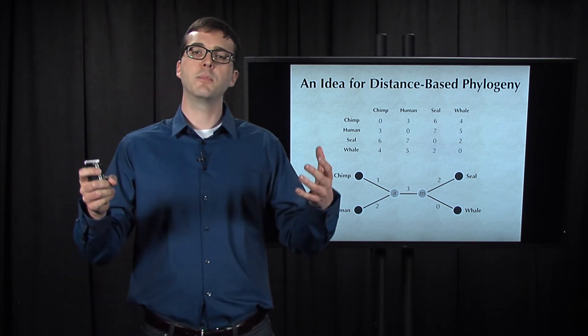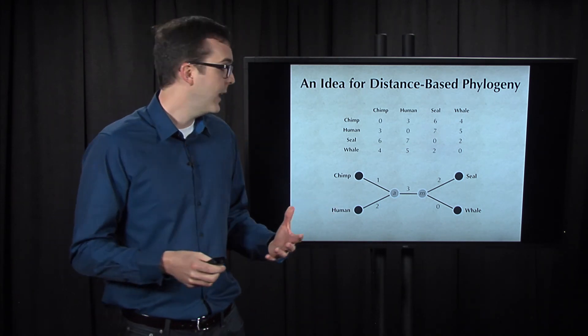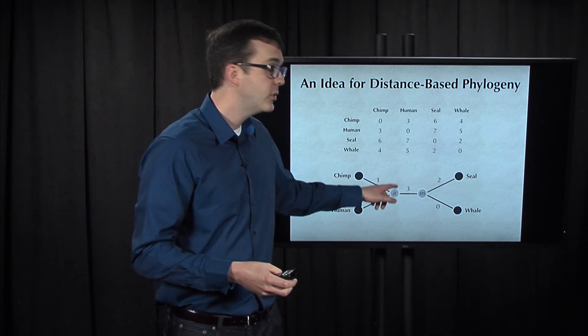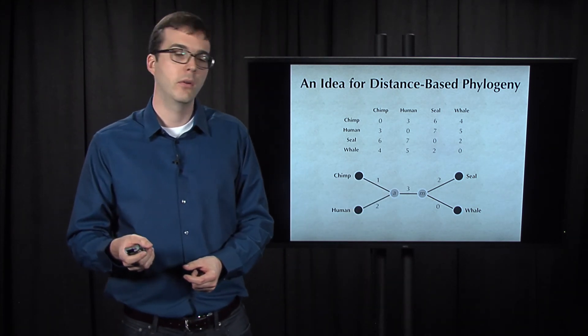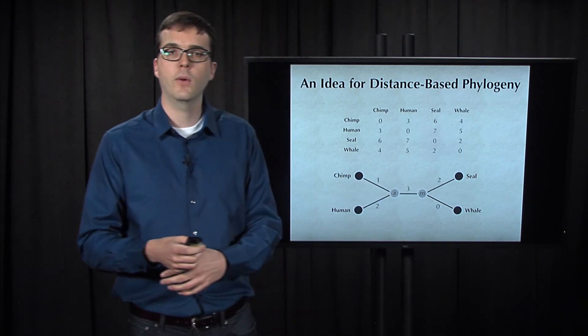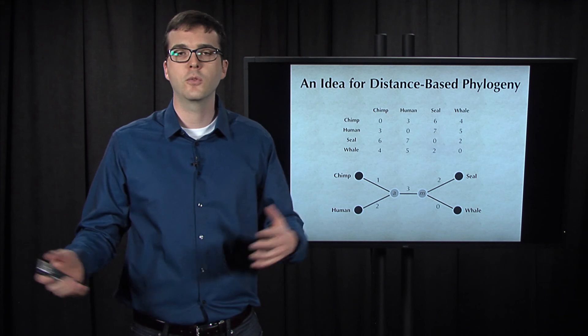So the one thing I would like to point out, though, is that it's possible for, when we're reconstructing the tree, an internal edge to have weight 0. We didn't know that this edge had to have weight 3. We could have had some other distance matrix where it had weight zero.